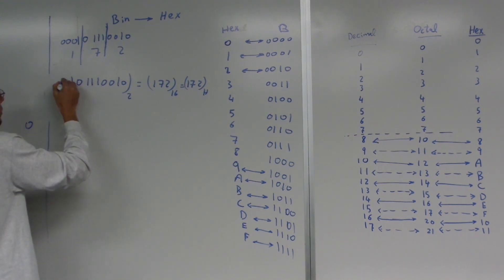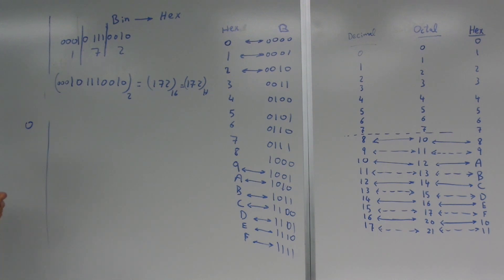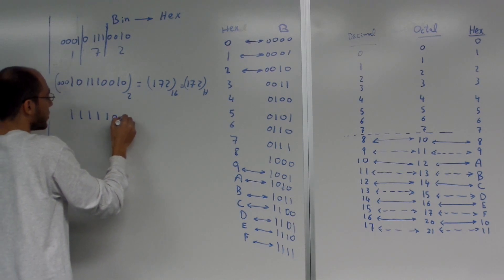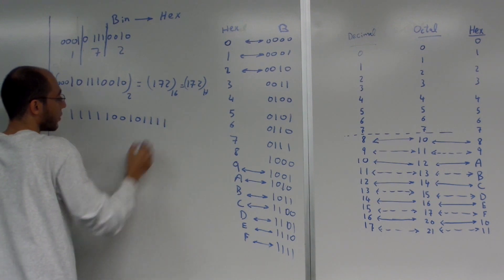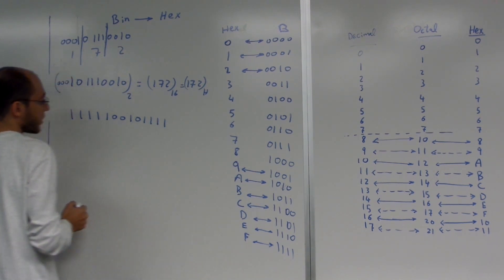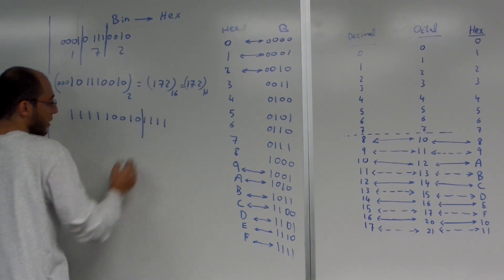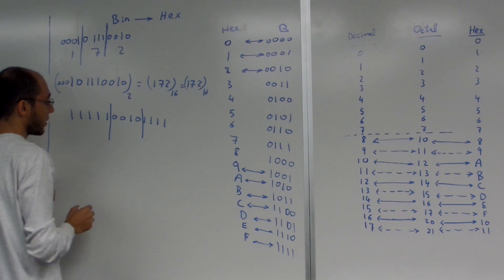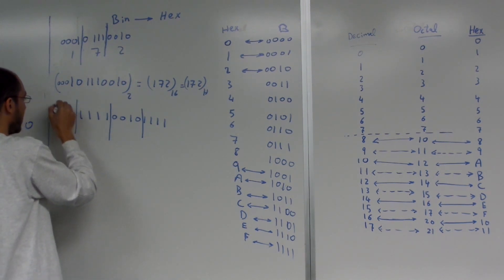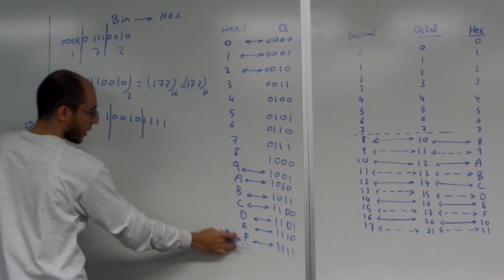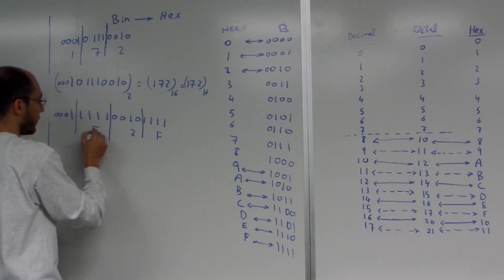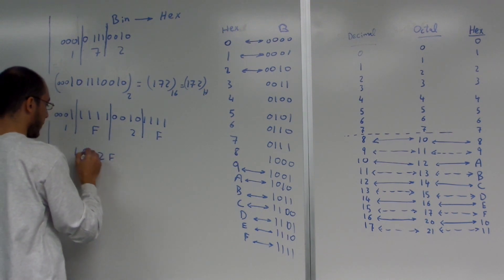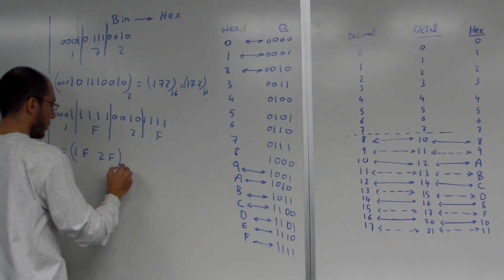Whether you want to add the leading zeros or not doesn't really matter. Let's take another example: 1 1 1 1 1 1 0 0 1 0 1 1 1 1. Dividing into groups of four: the first four bits correspond to F, the next four to 2, the next four to F, and the last group to 1. So it becomes 1F2F in hexadecimal.